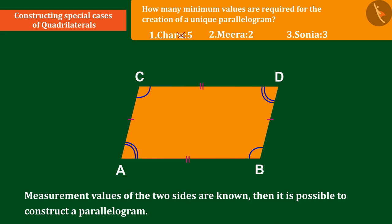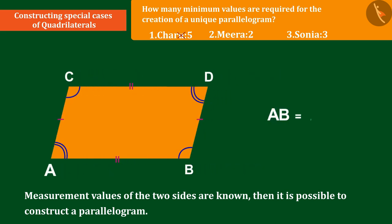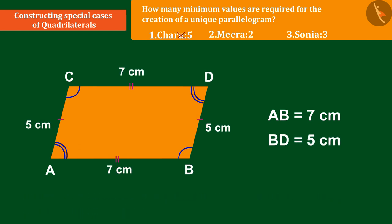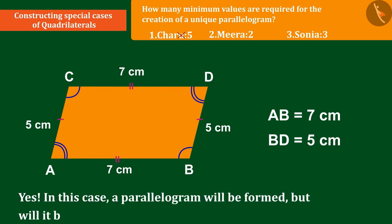Suppose the measurement values of adjacent sides AB and BD of a parallelogram are 7 cm and 5 cm, from which we can conclude the following. Yes, in this case a parallelogram will be formed, but will it be unique? Let's discuss this.